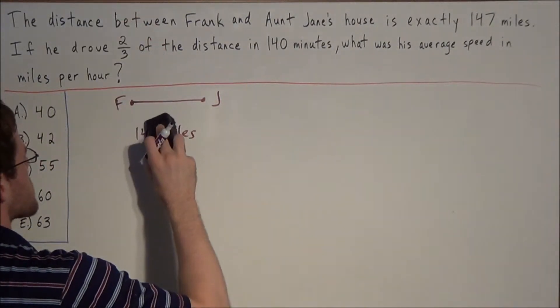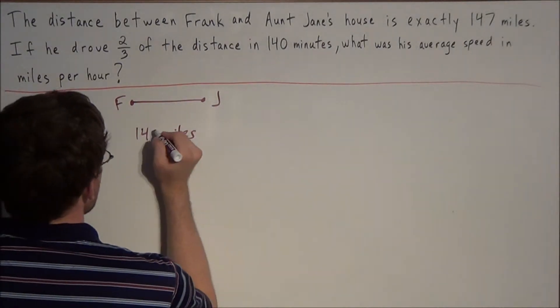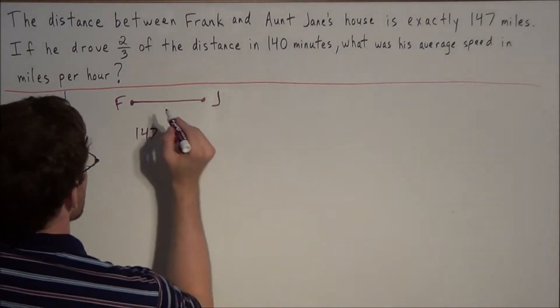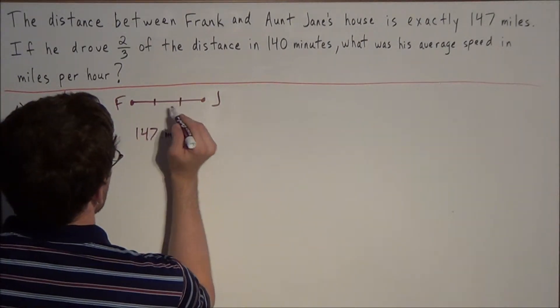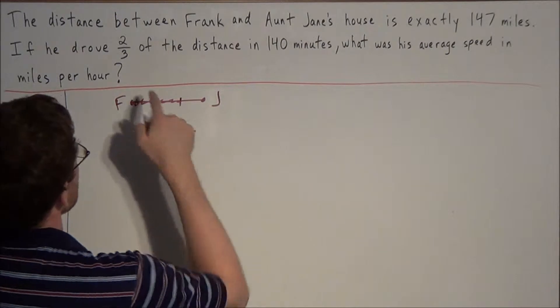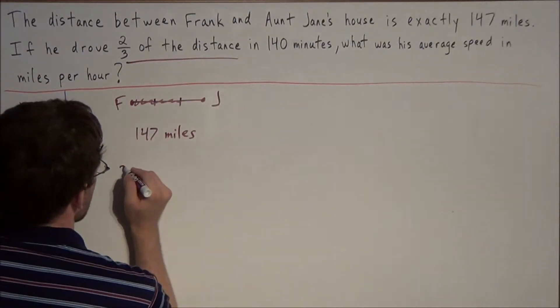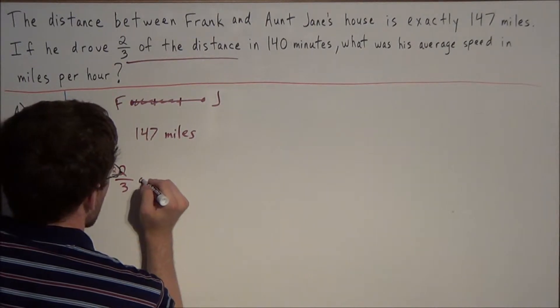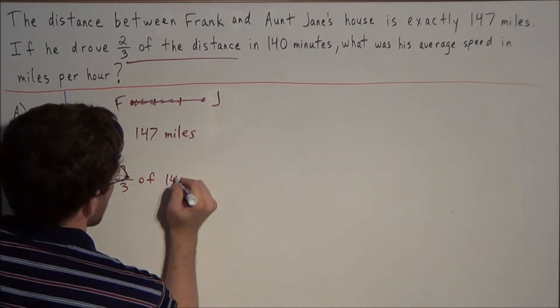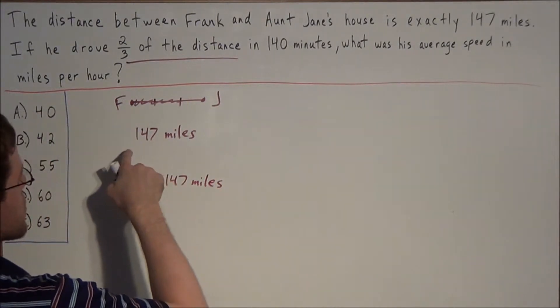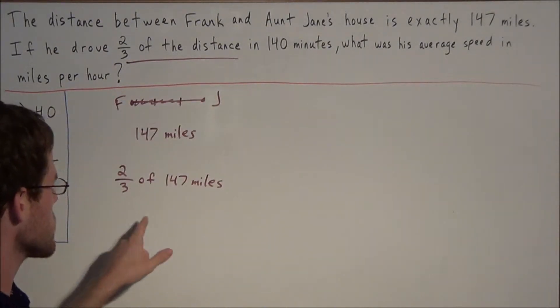The second sentence tells us he drove two-thirds of the distance. We section off two-thirds on the diagram. What we're looking for is two-thirds of the distance, which is two-thirds of 147 miles, since the total distance is 147 miles.